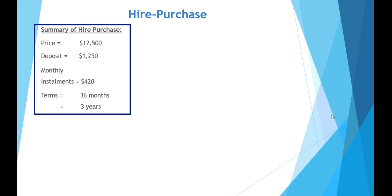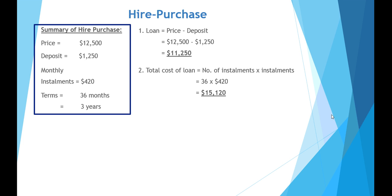Let's look at this arrangement. We have a price of $12,500, a deposit of $1,250 or 10%, and then monthly installments of $420 over three years or 36 months. The actual loan amount is the difference between the price and the deposit — $11,250. The total cost on the loan component is the number of installments multiplied by the value of the installments: 36 monthly installments at $420 means you're paying $15,120 for the privilege of this loan.